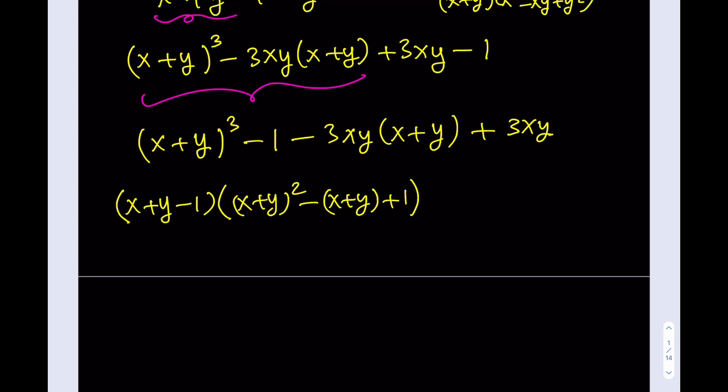Awesome. Now, for the last two terms, what I can do is I can actually take out a negative 3xy. Then I should be getting x plus y. Notice that x plus y is positive here because I took out a negative sign and minus 1.